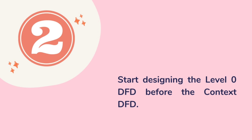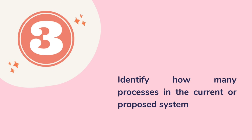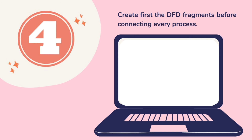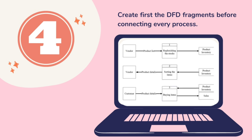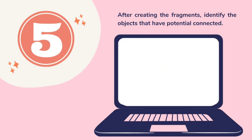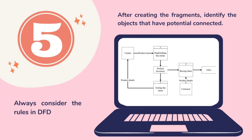Step number two: start designing the level zero DFD before the context DFD. Step number three: identify how many processes are in the current or proposed system. Step number four: create first the DFD fragments before connecting every process. And for the last step, after creating the fragments, identify the objects that have potential connections. Always consider the rules in DFD.